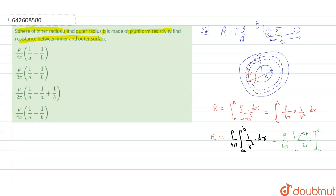On solving we are getting R is equal to rho upon 4 pi and this comes to be 1 upon R with limit A and B minus is also included.